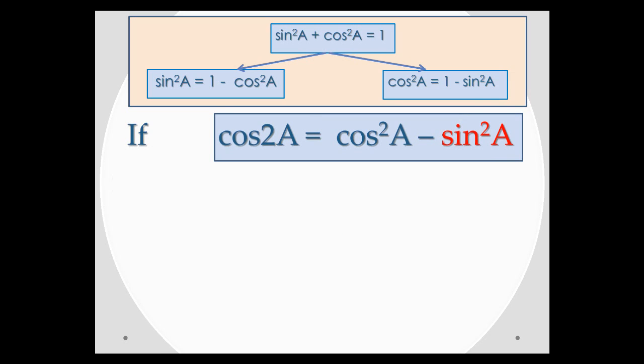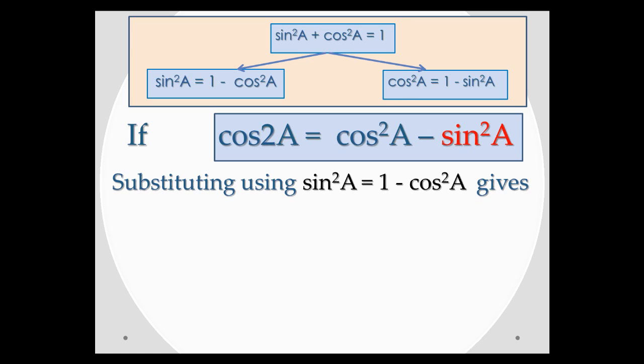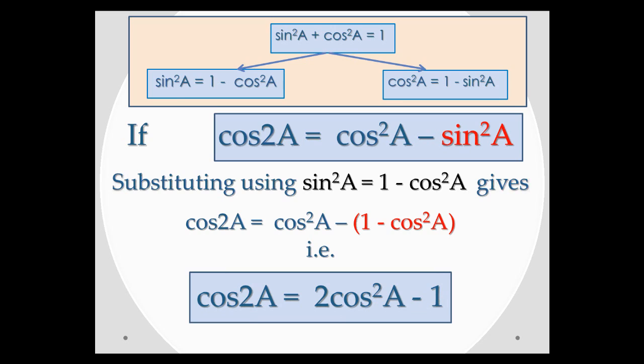Starting again from cos squared a minus sine squared a, if we make use of the fact that sine squared a equals 1 minus cos squared a and replace what's shaded in red with that substitution, we find that cos 2a equals cos squared a minus (1 minus cos squared a), in other words cos 2a equals 2 cos squared a minus 1.